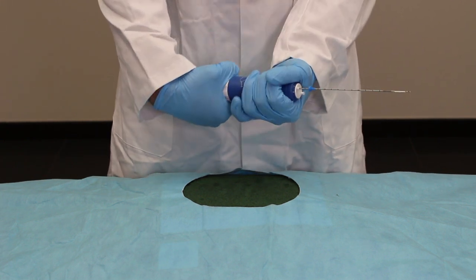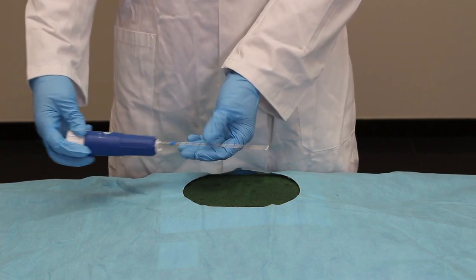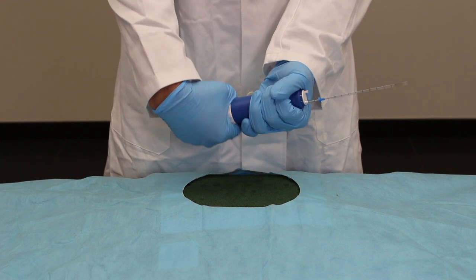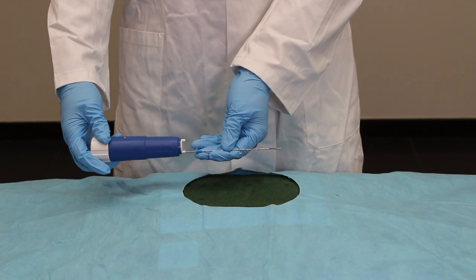One half turn will withdraw the cannula and lock it into place. An additional one half turn will withdraw the stylet and lock it into place. The instrument is ready to fire.